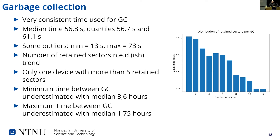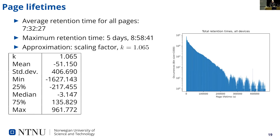The minimum time between garbage collections was underestimated, with a median of about 3.6 hours, and the maximum time was also underestimated, showing a clear discrepancy in the analytical model. Average retention time for all pages was about seven hours, for a system with a maximum writing rate of 20 minutes per write. The maximum time was about five days and eight to nine hours. The table shows the result when applying the scaling factor to the approximation, and it is not too bad — about half an hour off for the most inaccurate device.